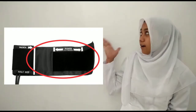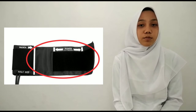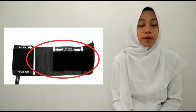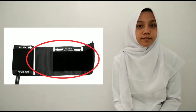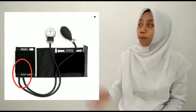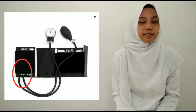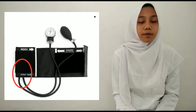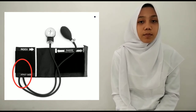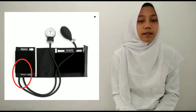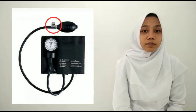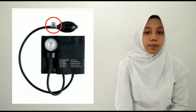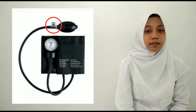The next part is the cuff, which serves to accommodate the air pressure and to detect the patient's blood pressure measurement. The next is the pressure bladder, which is an inflatable part filled with compressed air to close the artery. And the last is the valve, which serves to close or open the air flow from the pump into the cuff.